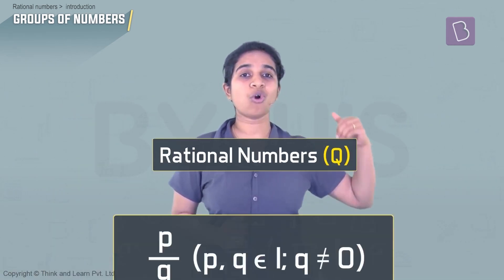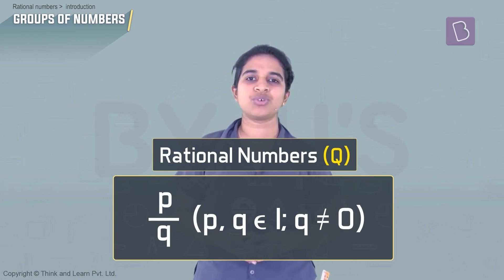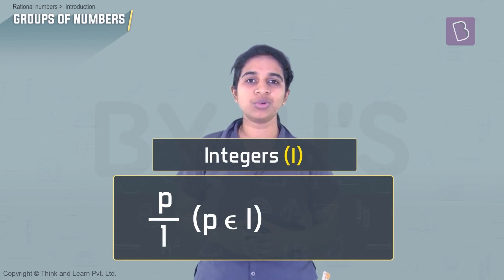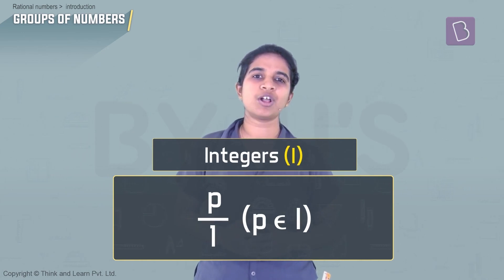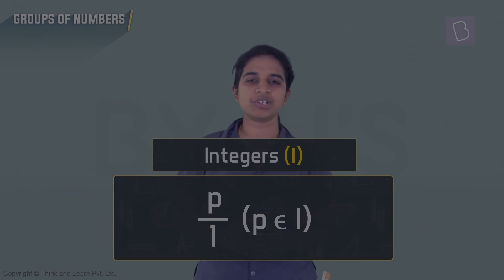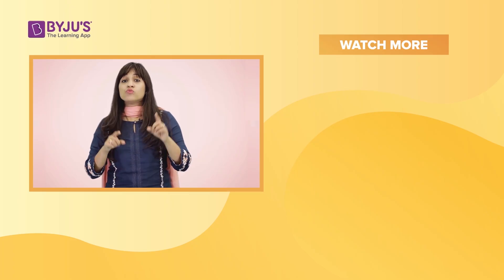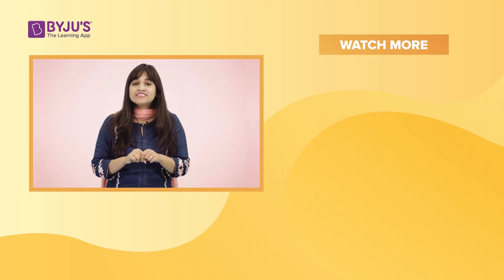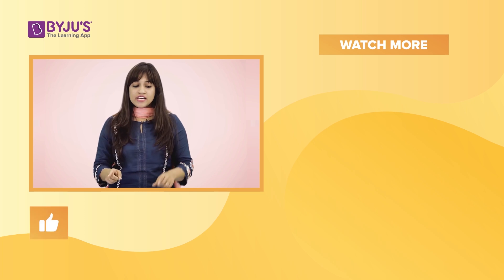Actually, even all the integers are rational numbers — because q can be one. If you put q equal to one, they all become integers. So integers are rational numbers.